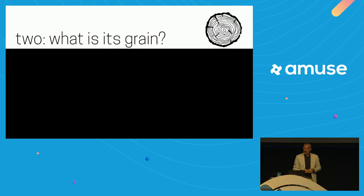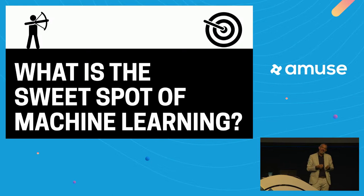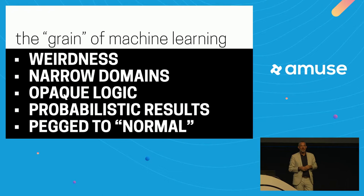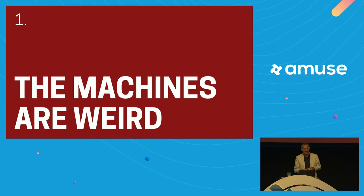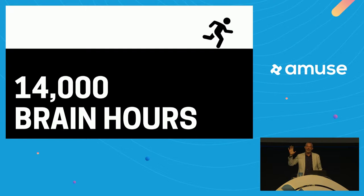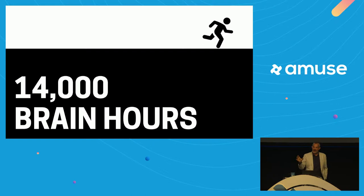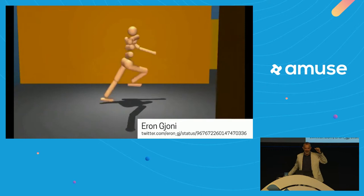I want to talk about the grain of machine learning — its sweet spot, its unique strengths and weaknesses. The first one: the machines are weird. They sift through enormous volumes of data and come to some pretty surprising conclusions. It takes a human being about 14,000 brain hours to learn to run. An AI can figure out how to run in less than half as many CPU hours — but the results look strange: using the arms for forward momentum with little consideration of friction or rotator cuffs.